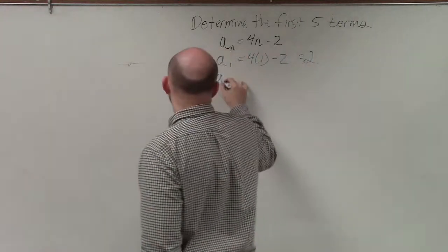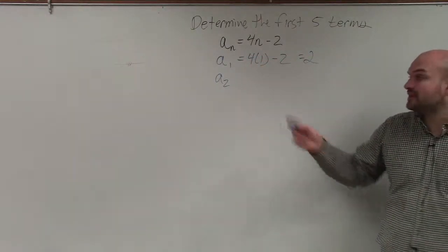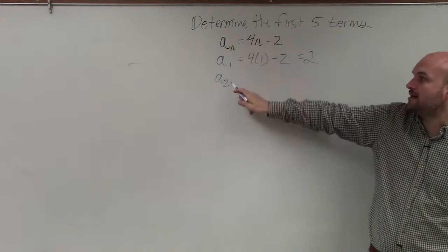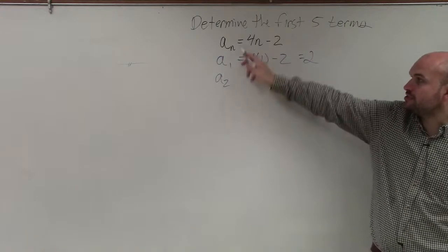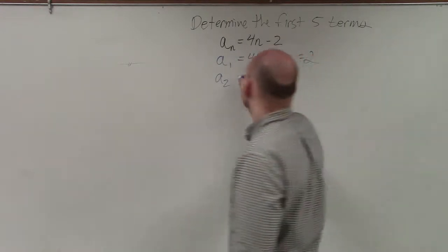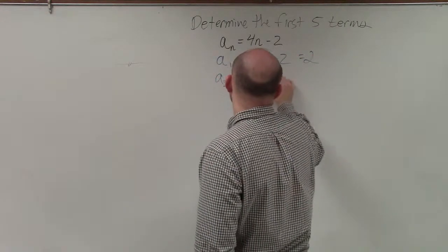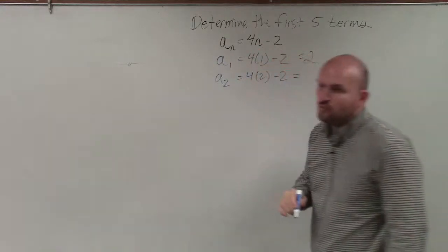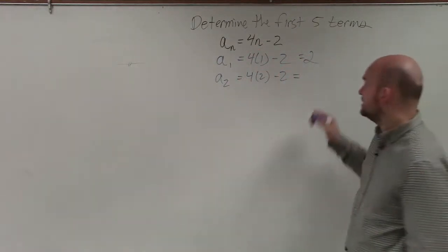Now let's find the second number in the sequence. I'm going to put 2 wherever there's an n. So I have 4 times 2 minus 2. Well, 4 times 2 is 8 minus 2 is 6.